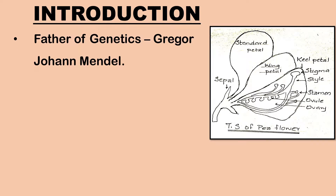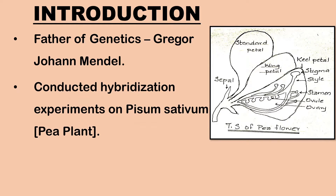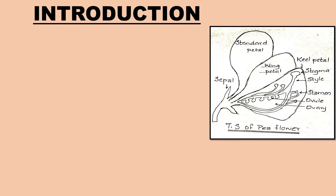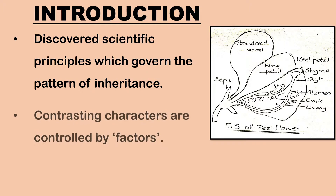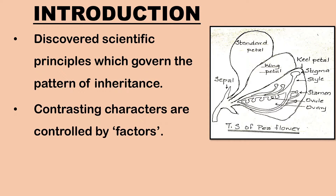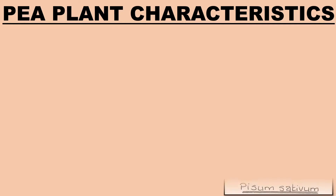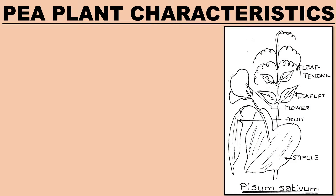Mendel is known as the father of genetics. Mendel conducted hybridization experiments on garden pea plant Pisum sativum and discovered the scientific principles which govern the patterns of inheritance. He explained that contrasting characters are controlled by units which are called factors. Mendel chose pea plants for his experiments because of the following reasons.